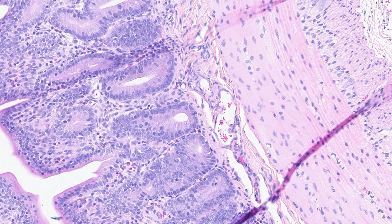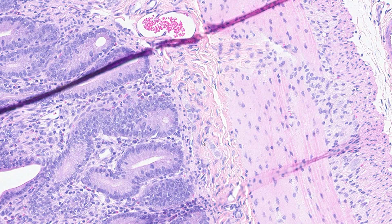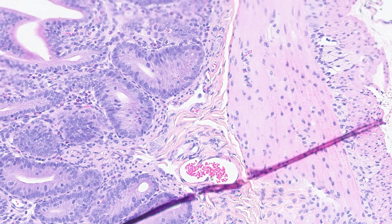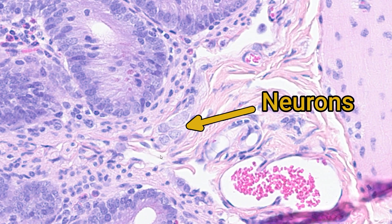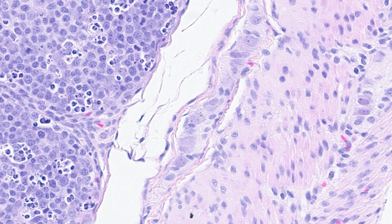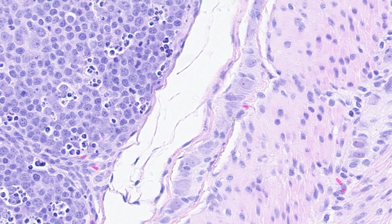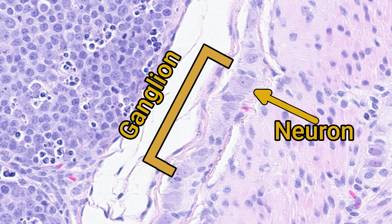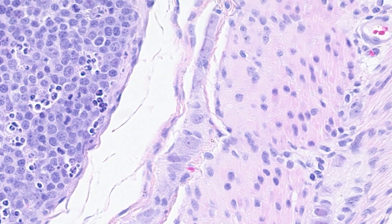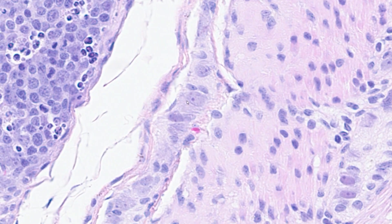The last structure to find in the submucosa is ganglia, which are composed of neurons. The neurons have slightly more basophilic, granular cytoplasm and are quite irregular in shape, with really large nuclei compared to the other cells in the submucosa, often with very prominent nucleoli.